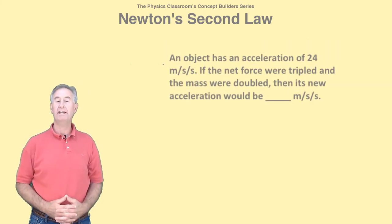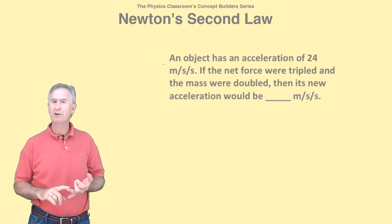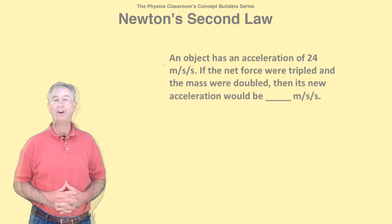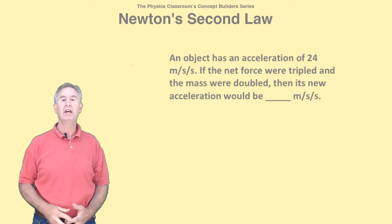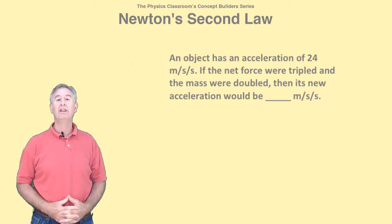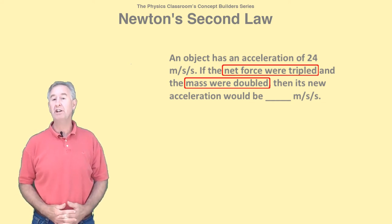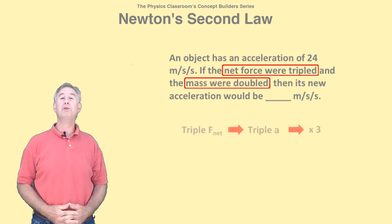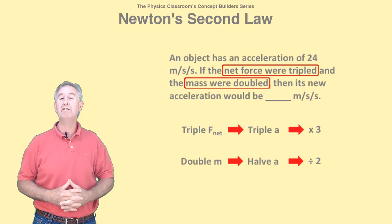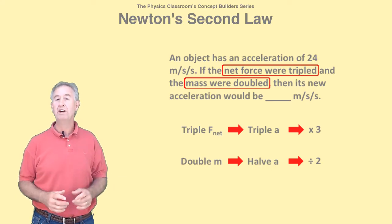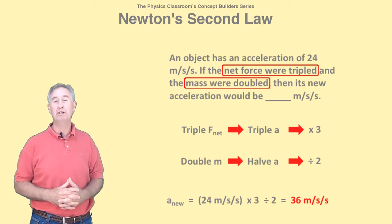In situations where both F net and M are changed, you must make two changes to the acceleration. Take your time, get yourself organized, and apply the same principles we've been talking about. In this problem, we have an acceleration of 24 meters per second per second, and two changes are made: the net force is tripled and the mass is doubled. When F net increases, the acceleration increases, so we need a multiplying factor of three. And when mass increases, the acceleration decreases, so we need a dividing factor of two. The new acceleration is 24 times three divided by two, and that's 36 meters per second per second.